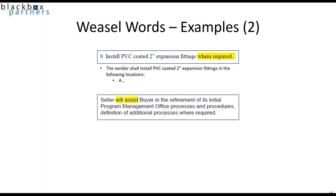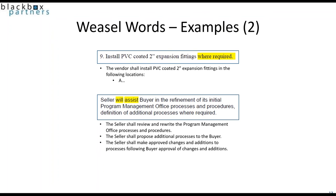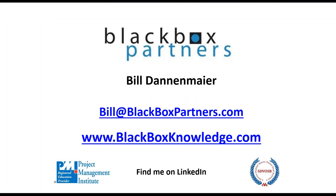Here's another example: 'Seller will assist buyer in the refinement of its initial program management office processes and procedures. Definition of additional processes where required.' We're just 'assisting,' which has no concrete element to it, and 'where required' gives it no end either. Instead we should write: 'The seller shall review and rewrite the program management office processes and procedures. The seller shall propose additional processes to the buyer. The seller shall make approved changes and additions to processes following buyer approval of changes and additions.'